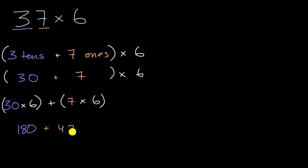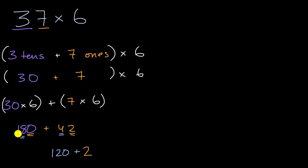We just then need to add these two numbers, and we can think about them in terms of different places. In the ones place: zero ones plus two ones gives us two ones. In the tens place: we have four tens and eight tens, which is 12 tens, or 120. And then we have 100 from the hundreds place. Adding 100 plus 120 gives 220, and then adding the two ones gives us 222. So this is all going to be equal to 222.